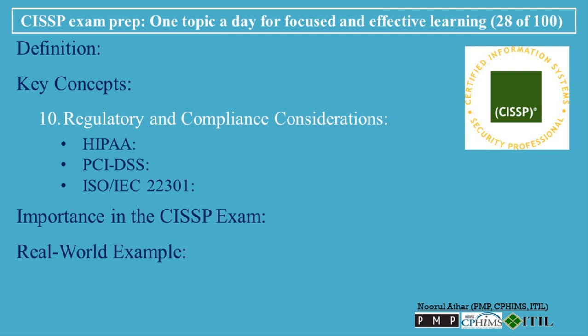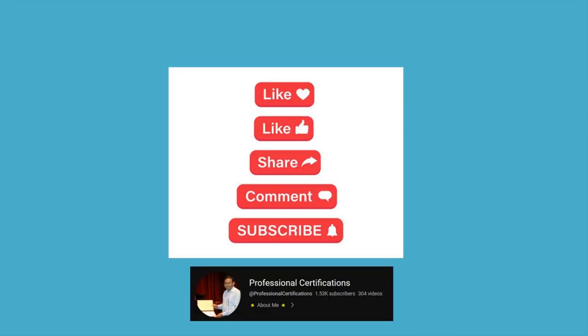Real-world example: A financial services firm conducts a BIA and identifies its trading platform as a critical business function. The BIA reveals that a disruption to the platform for more than one hour could result in significant financial losses and reputational damage. As a result, the firm sets an RTO of 1 hour and an RPO of 5 minutes for the trading platform, and implements real-time data replication and a hot-site failover strategy to ensure rapid recovery.